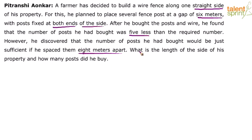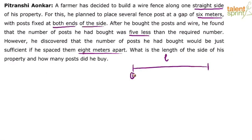The question is: what is the length of the side of his property and how many posts did he buy? Let's say the length of the side to be fenced is L. His plan is to put fence posts at a gap of 6 meters. So pole number 1 is here, after 6 meters pole number 2, after another 6 meters pole number 3, after another 6 meters pole number 4, and so on till the last pole.